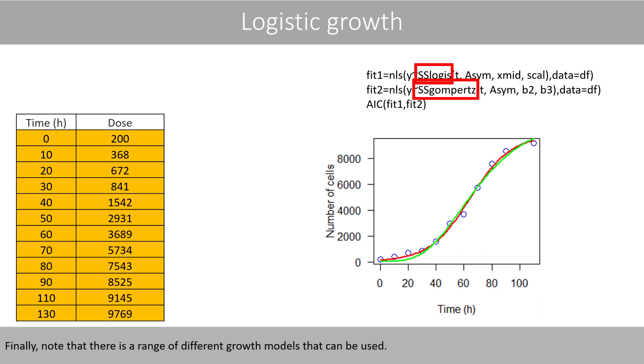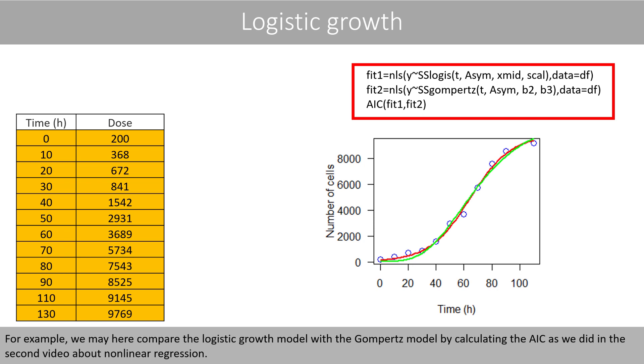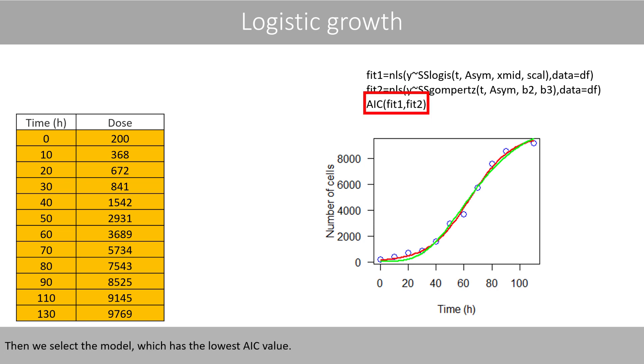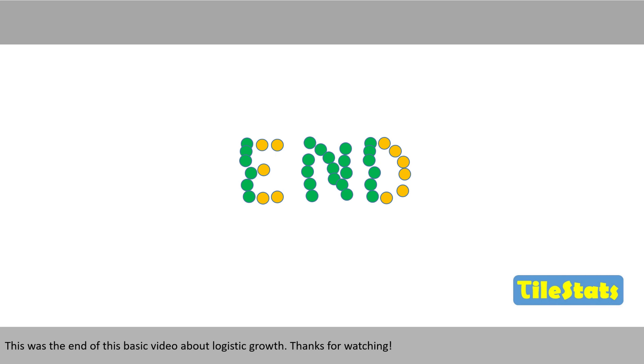Finally, note that there is a range of different growth models that can be used. For example, we may here compare the logistic growth model with the Gompertz model by calculating the AIC value as we did in the second video about nonlinear regression. Then we select the model which has the lowest AIC value. This was the end of this basic video about logistic growth. Thanks for watching!